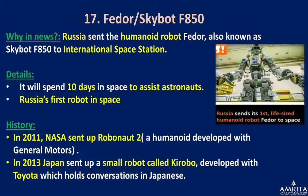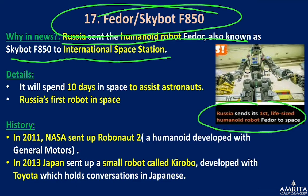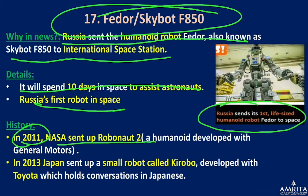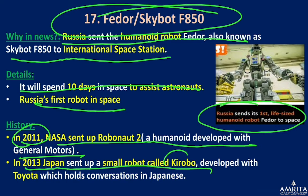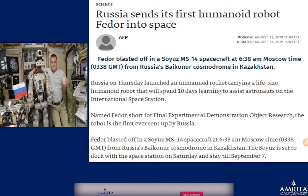FEDOR (Skybot 850): Russia sent its first life-size humanoid robot FEDOR, known as Skybot 850, to the International Space Station. It will spend 110 days in space to assist astronauts. Note: NASA had already sent Robonaut, developed with General Motors in 2013, and Japan had a small robot called Kirobo, developed with Toyota.